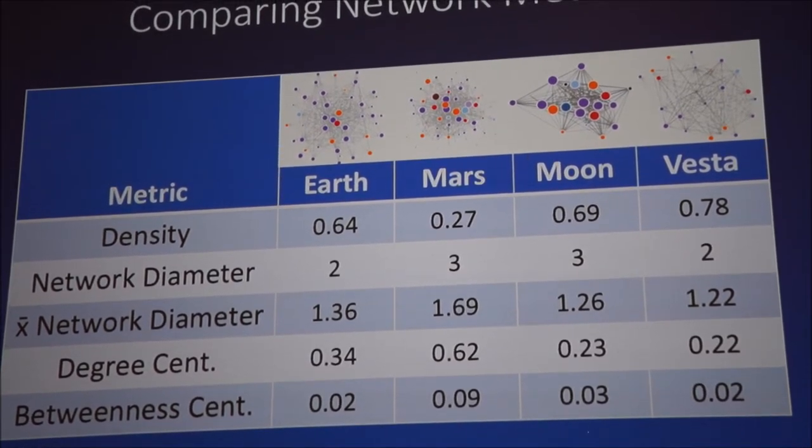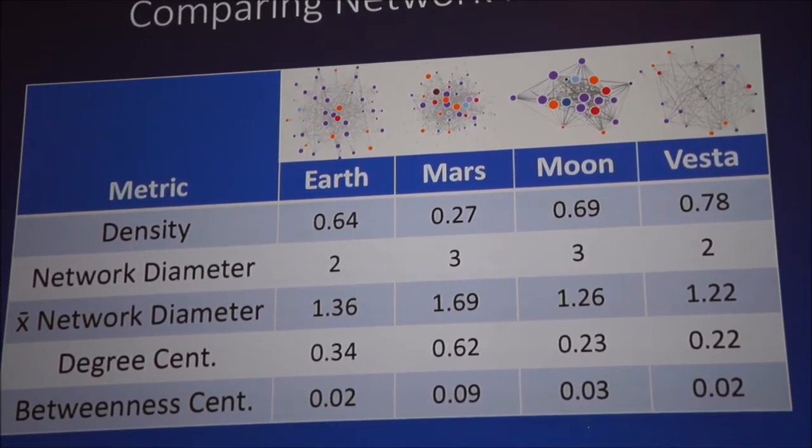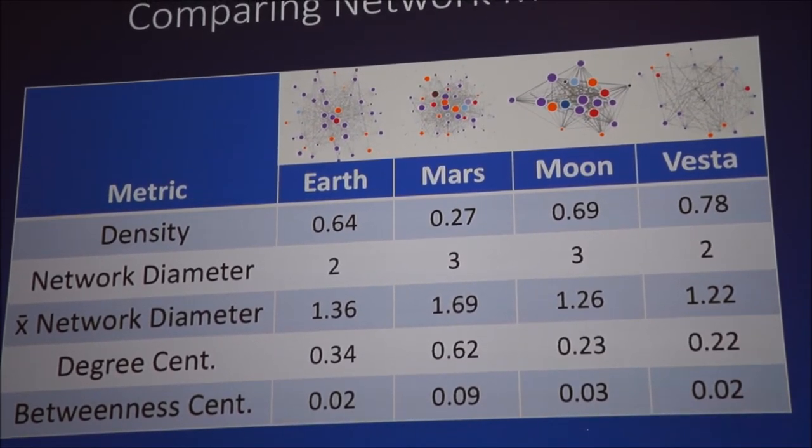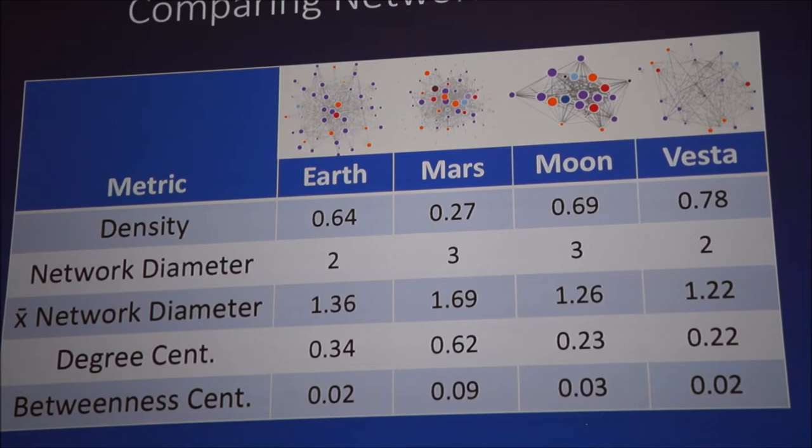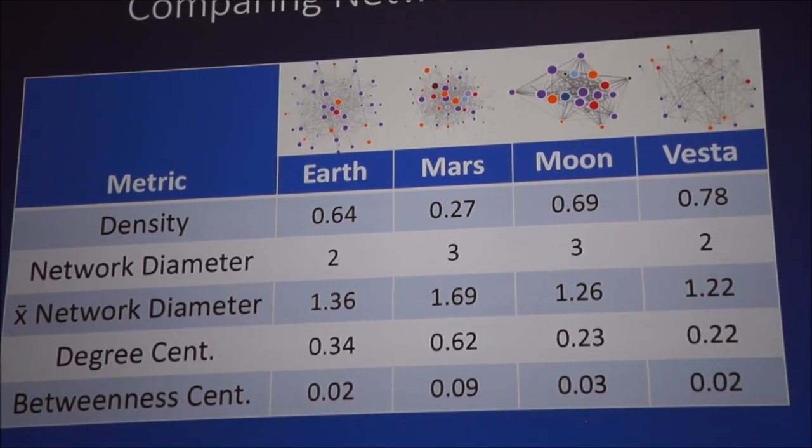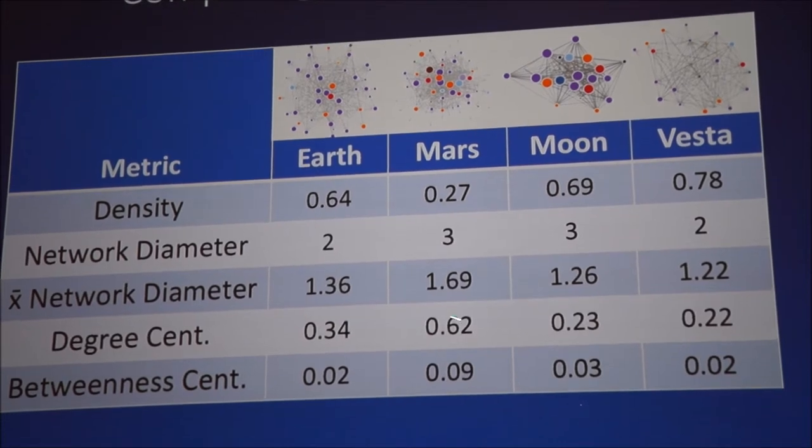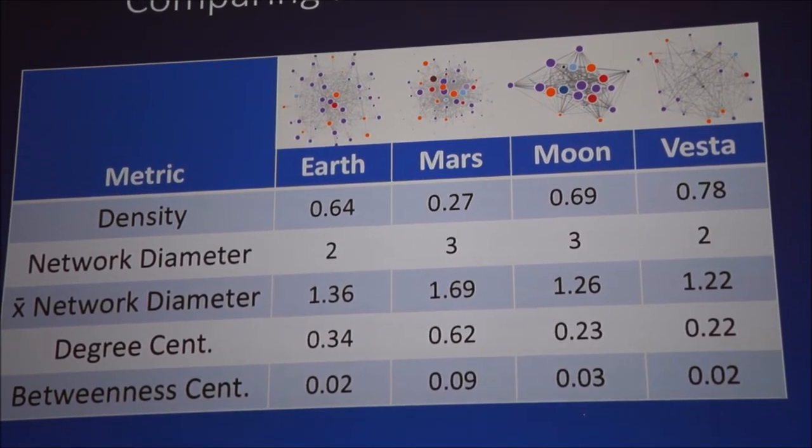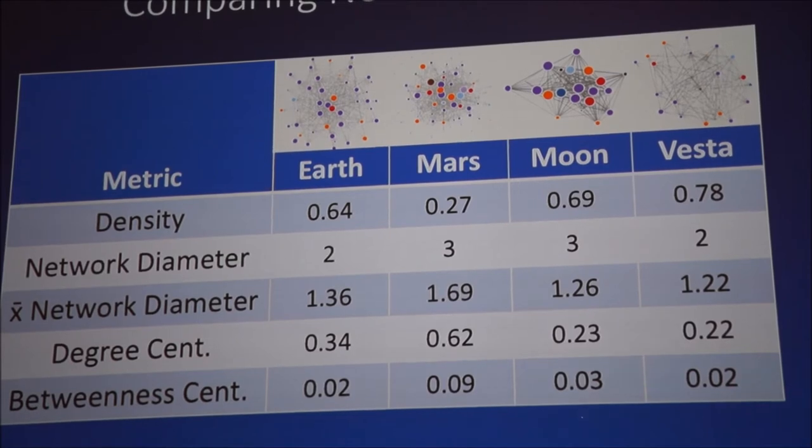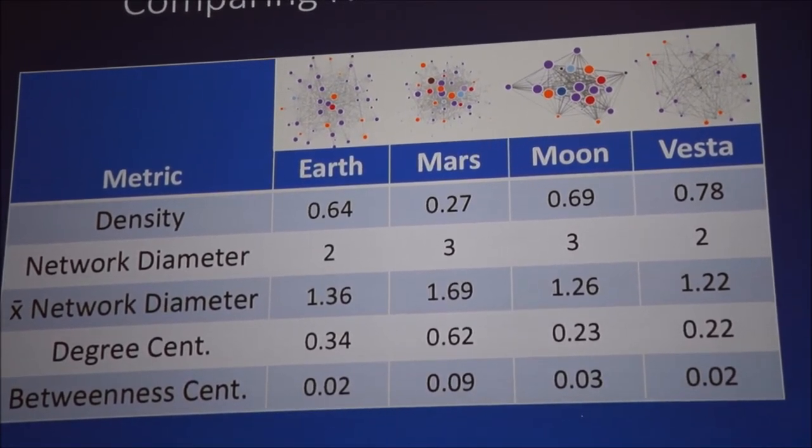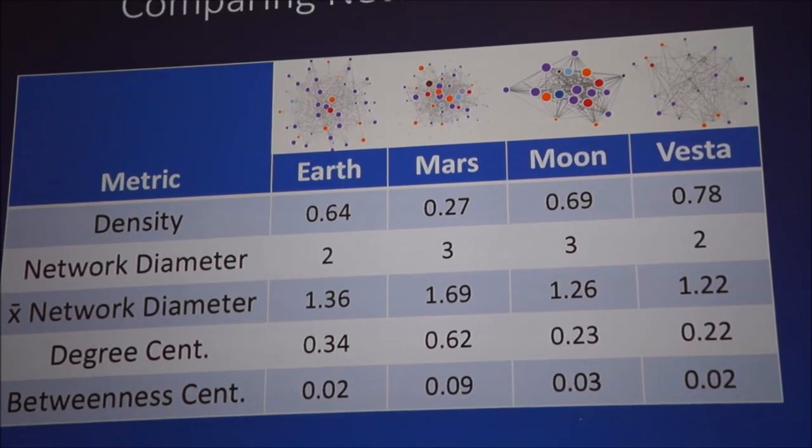Diameter is pretty similar across the board for all of these samples, but you'll notice that Mars has a higher, a distinctly higher average network diameter, so it has distinctly higher average degrees of separation, which along with the centralization measures, which are higher than all of the other samples, it tells us that there are a few really important key nodes in the Mars network that are connecting it to other minerals.